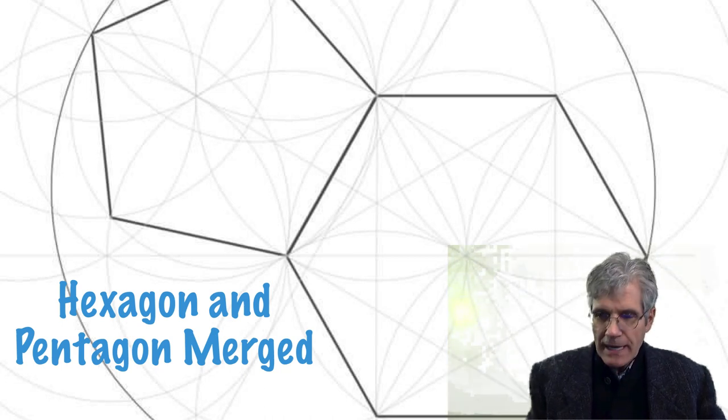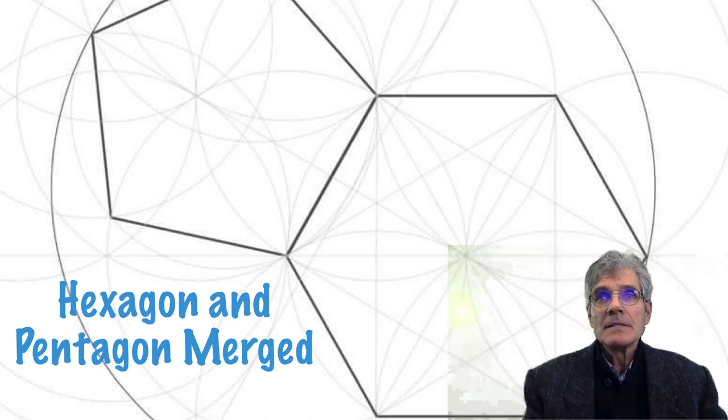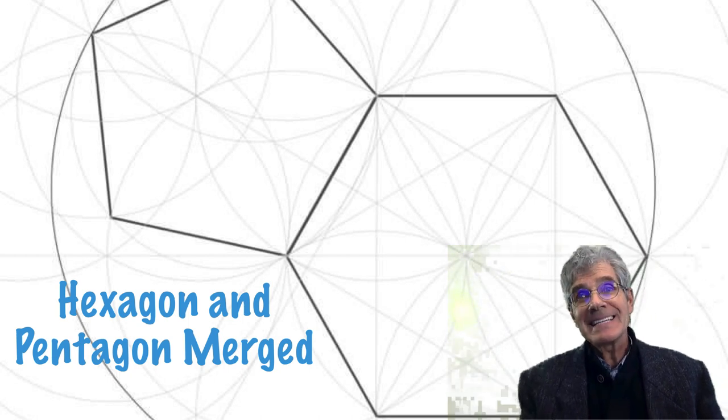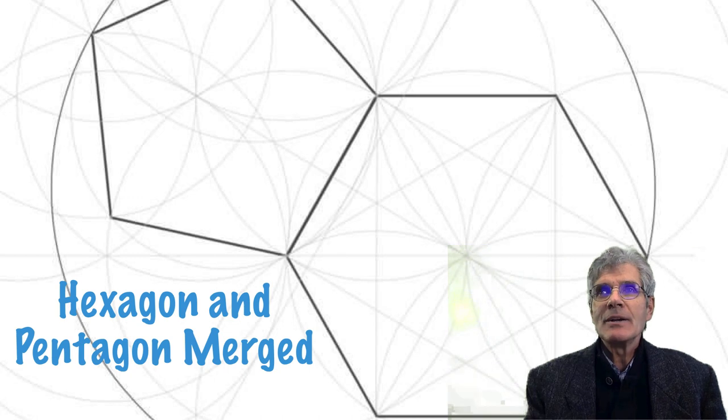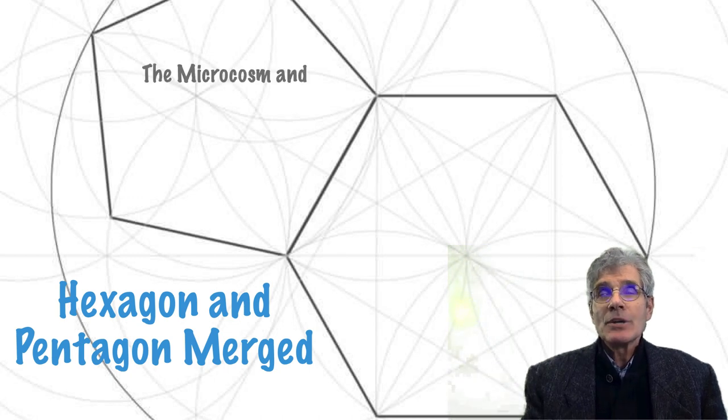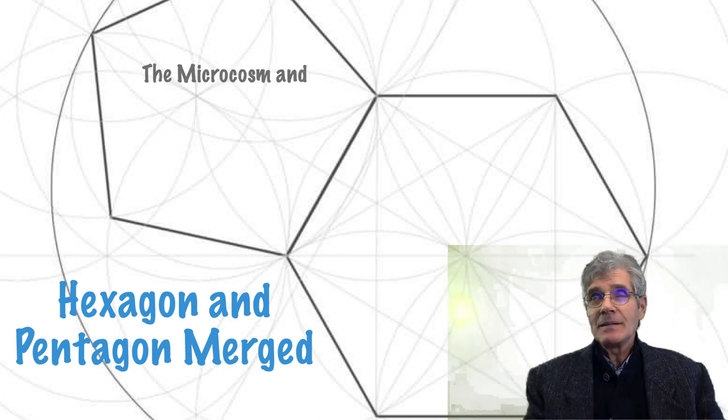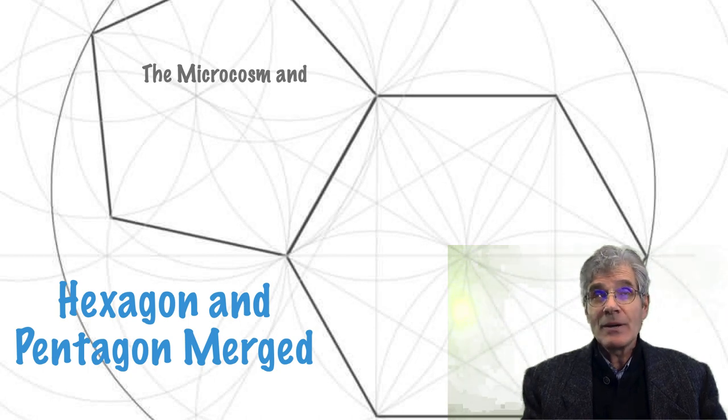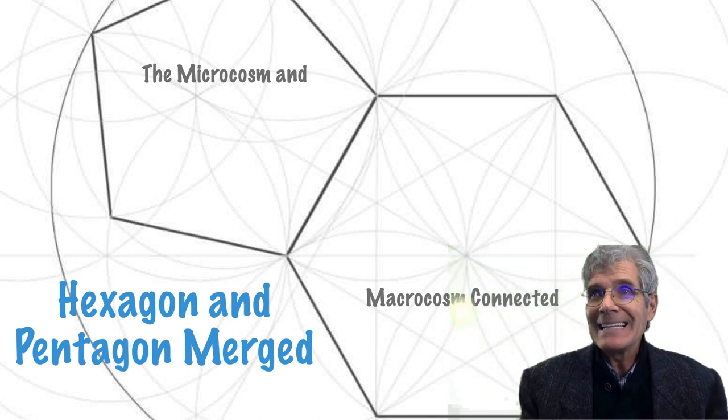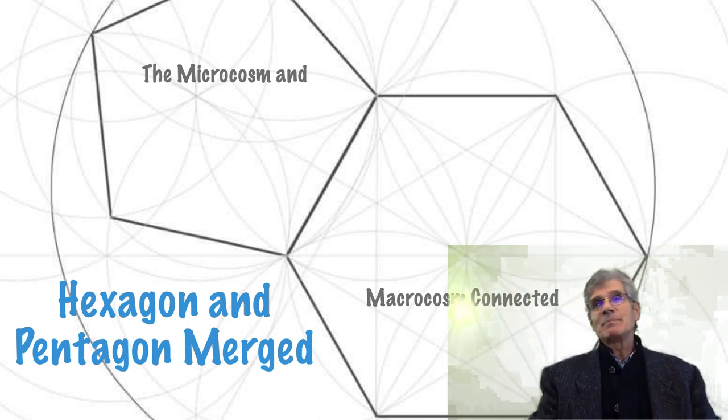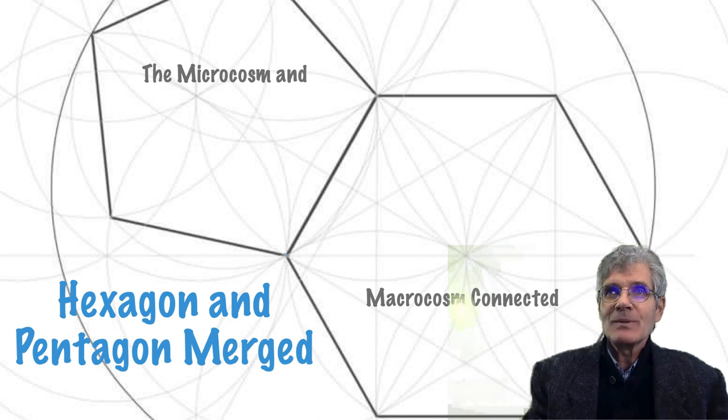So I've got a message for you today, speaking from my heart, about the hexagon and the pentagon merger, so beautifully illustrated here. The pentagon in ancient esoteric symbolism stands for the microcosm, the five-sided, and the six-sided hexagon speaks to the macrocosm.